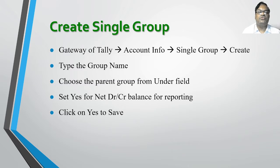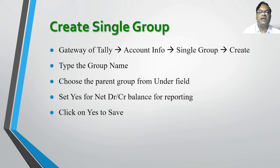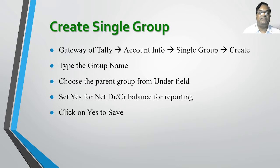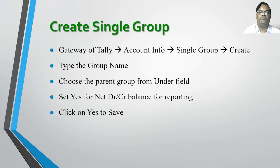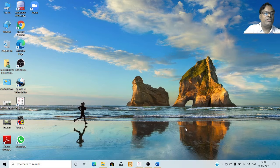I am specifying the options to create a single group. You need to go to Tally, and from the Gateway of Tally menu, go to Accounts Info, then Single Group, and click on Create option. Type the group name, choose the parent group under the Under field, set yes for net debit balance for reporting, and at the end click yes to save the group. This is going to create a single group.